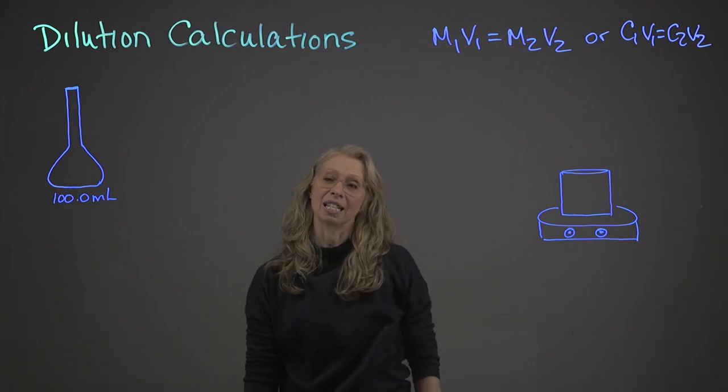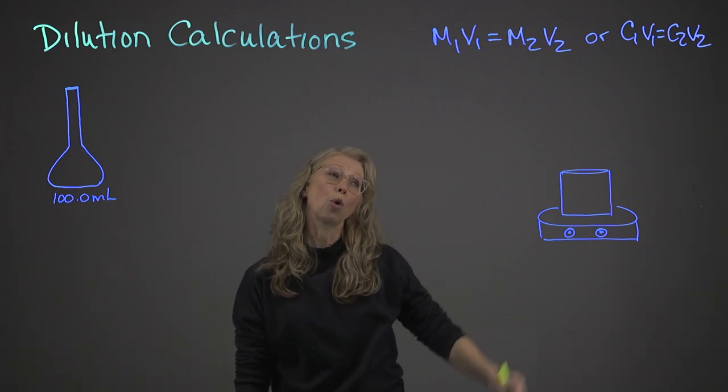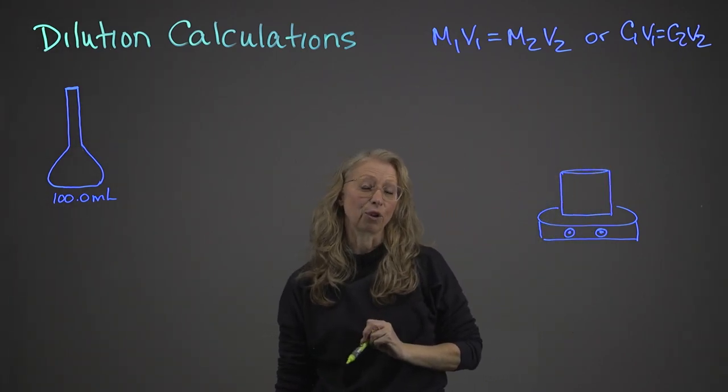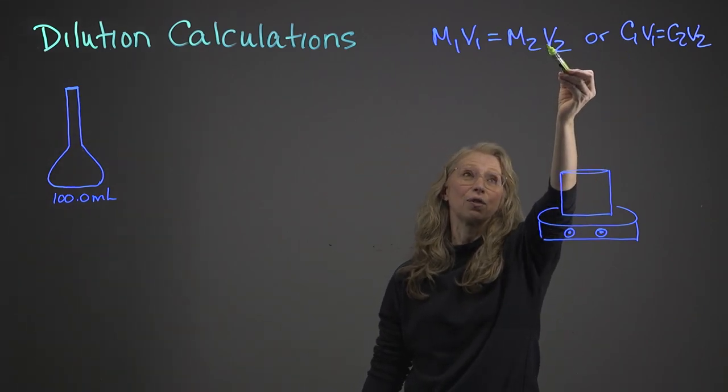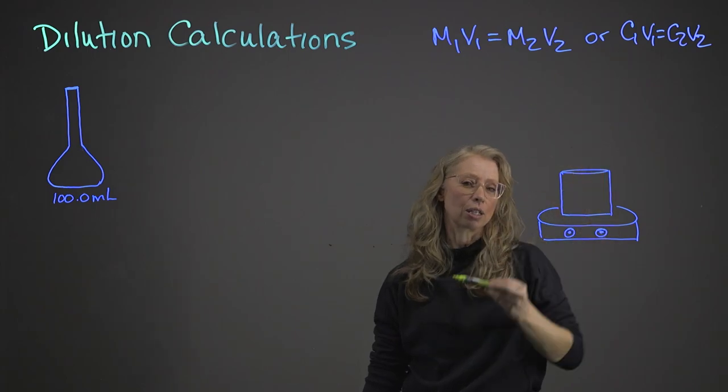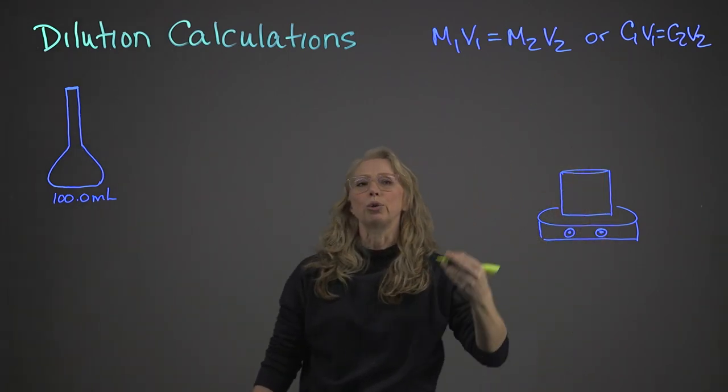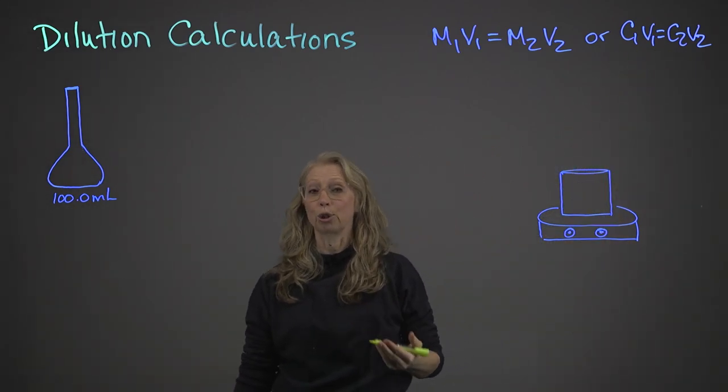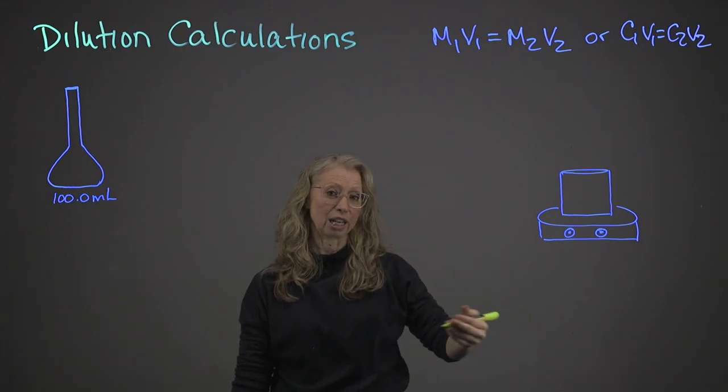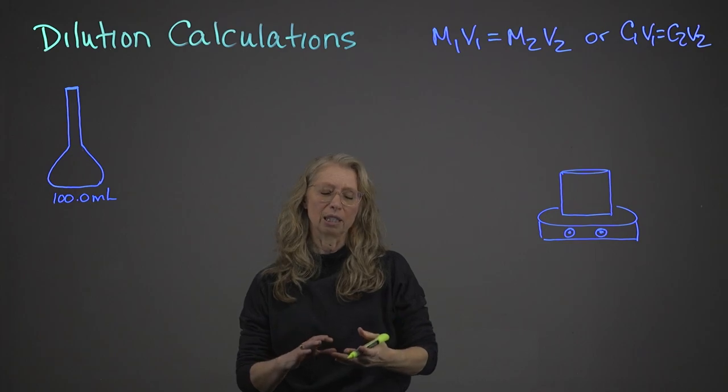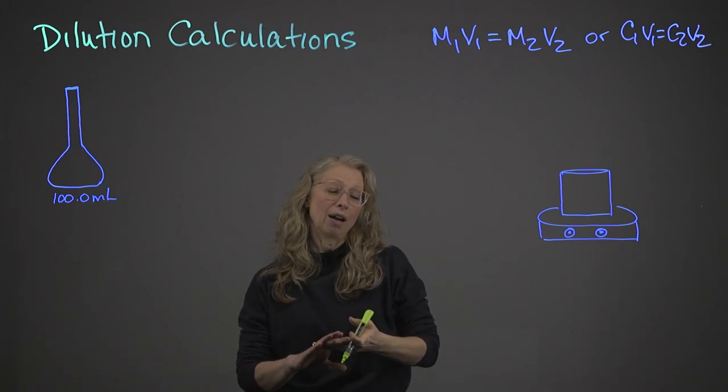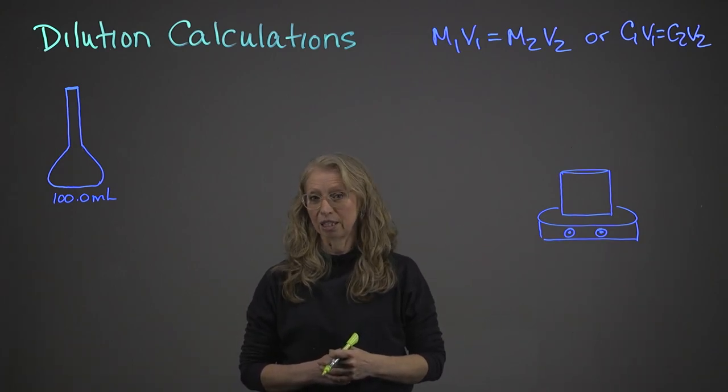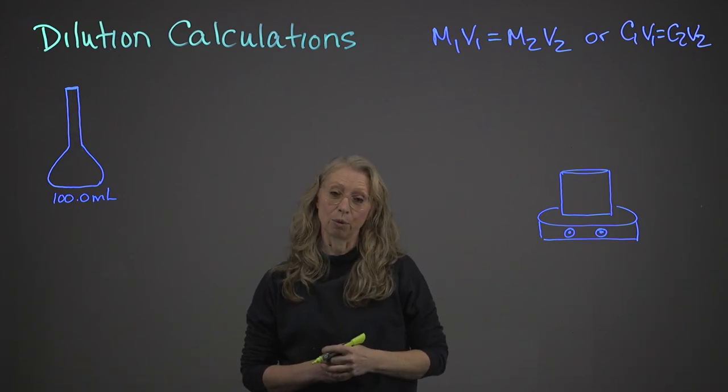The formula can be written as M1V1 equals M2V2 or C1V1 equals C2V2, where M stands for molarity, V is volume, and C is concentration. I prefer the C1V1 equals C2V2 because you can have solutions with different concentrations, whether it's molarity, parts per million, percent, or volume over volume. There are a variety of different concentration units that you can use. So I will use the C1V1 equals C2V2.